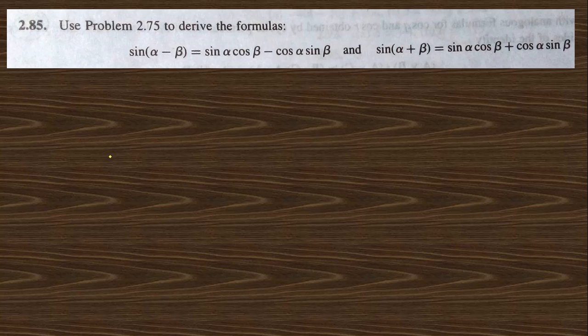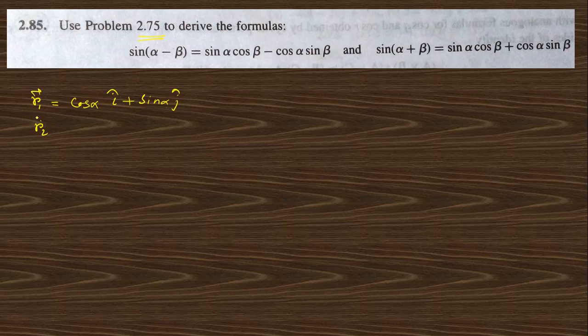Next, question 2.85: use problem 2.75 to derive the sine addition formula. In problem 2.75, the unit vectors were given as r1 = cos α i cap + sin α j cap and r2 = cos β i cap + sin β j cap.